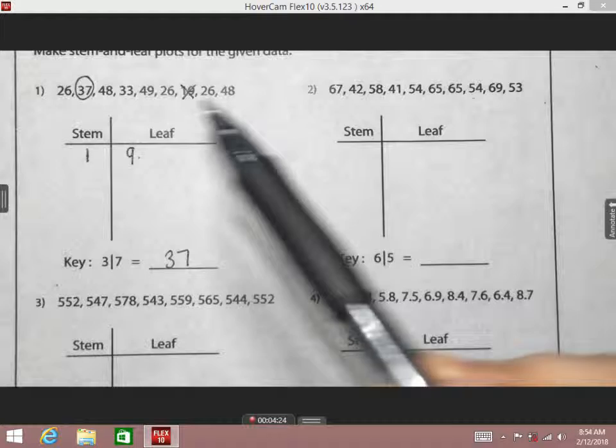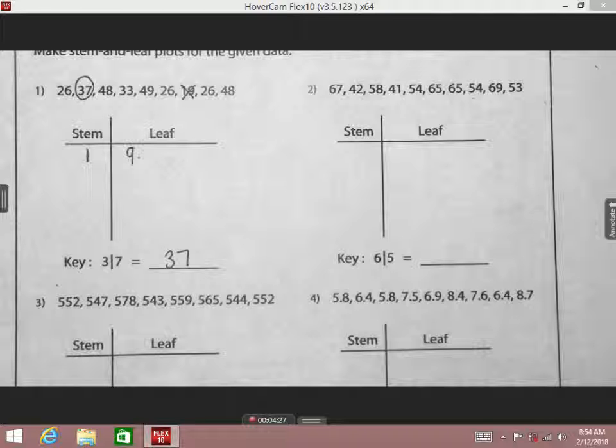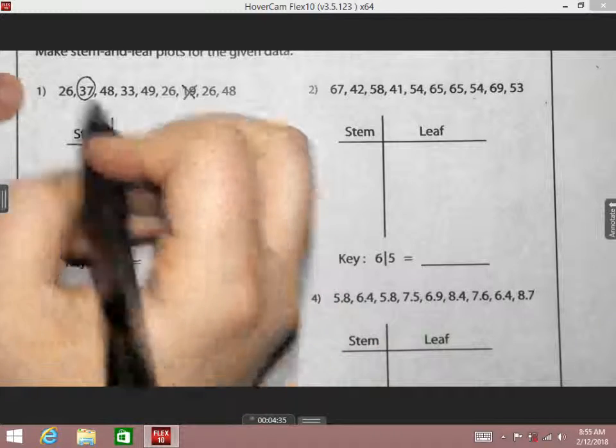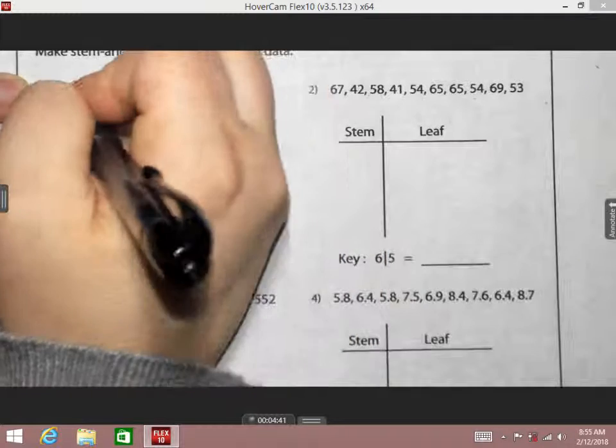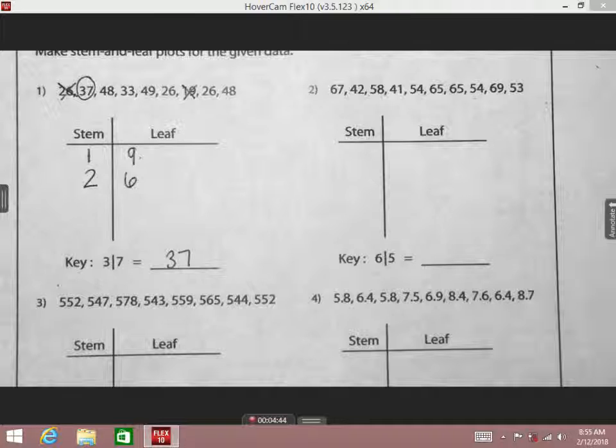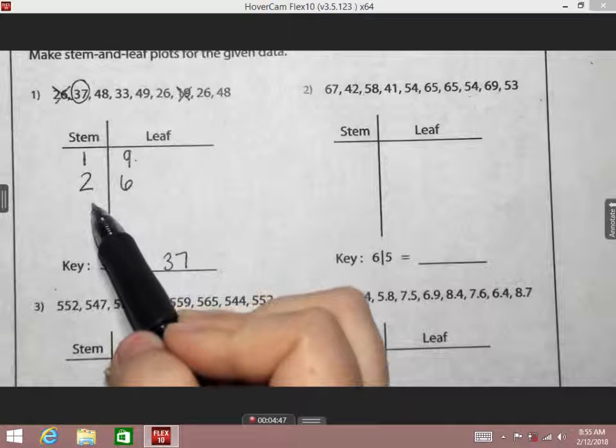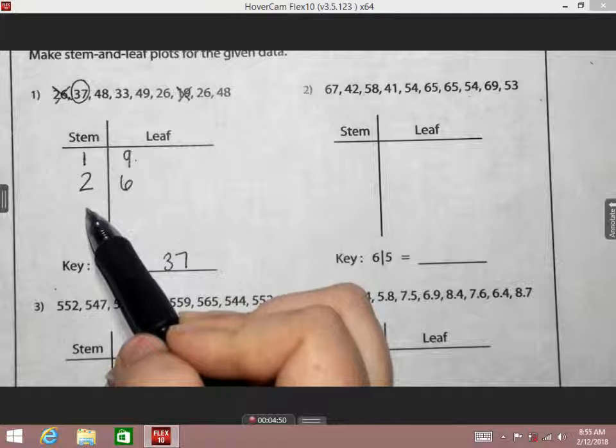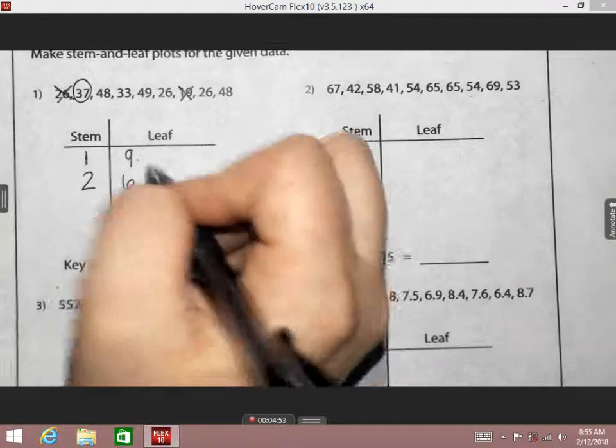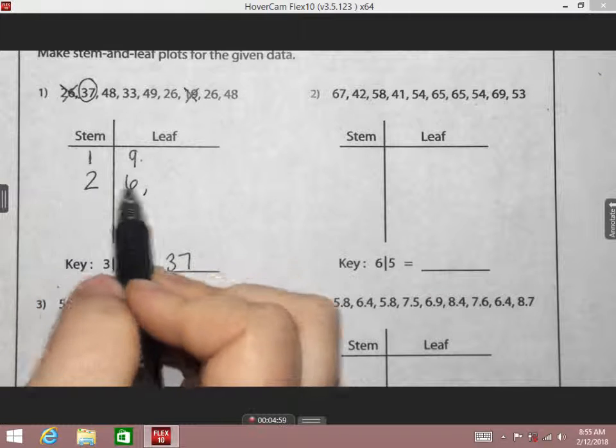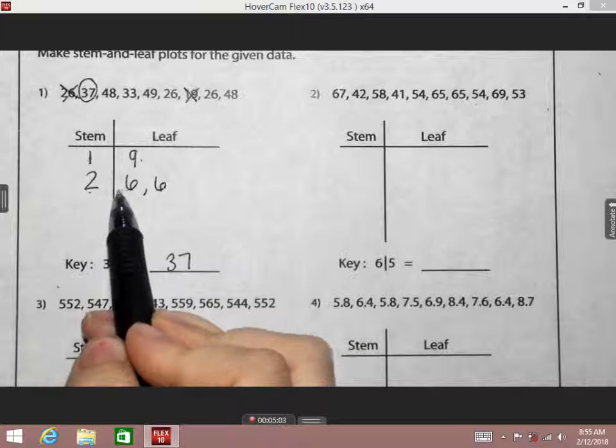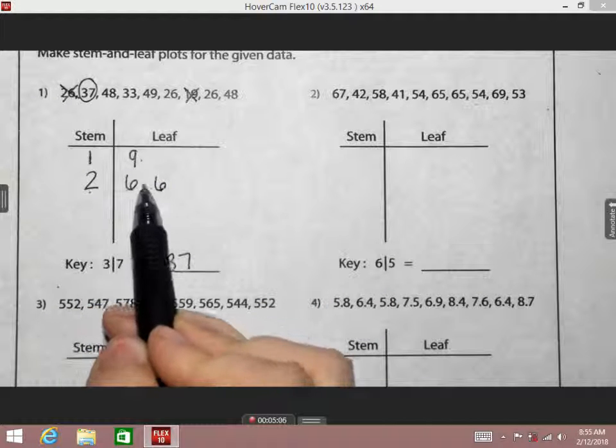Now what we're going to do is we're going to fill the rest of this chart in to where we have the thirties, maybe twenties, forties, sixties, eighties, where we have our tens placed here. And then we can list out the numbers that are in the ones that are going to make our leaves. So can someone tell me what's my smallest number in this data list? Nineteen.